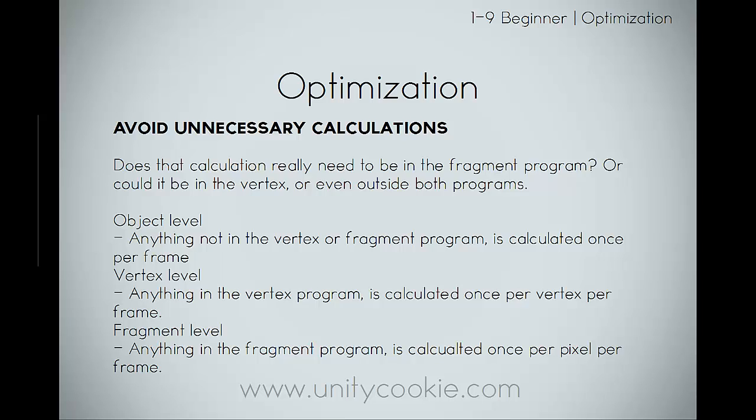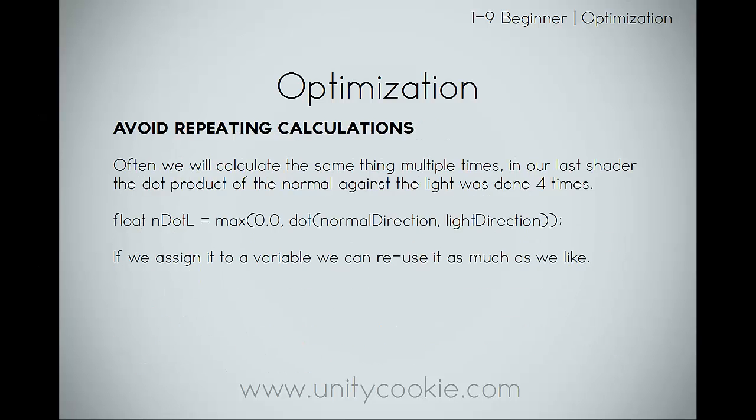One thing to point out is you need to avoid unnecessary calculations. Does that calculation really need to be in the fragment program, or could it be in the vertex shader or even outside both programs at the object level? Object level means anything not in the vertex or fragment program and is only calculated once per frame. Anything in the vertex program is calculated once per vertex per frame. Anything in the fragment program is calculated once per pixel per frame. So if you want the square root of 460, don't do that in the fragment shader - do it at the object level. Also avoid repeating calculations; in our last shader the dot product of normal against light was done 4 times. Store it as float nl = dot(normal, lightDir) and reuse it.